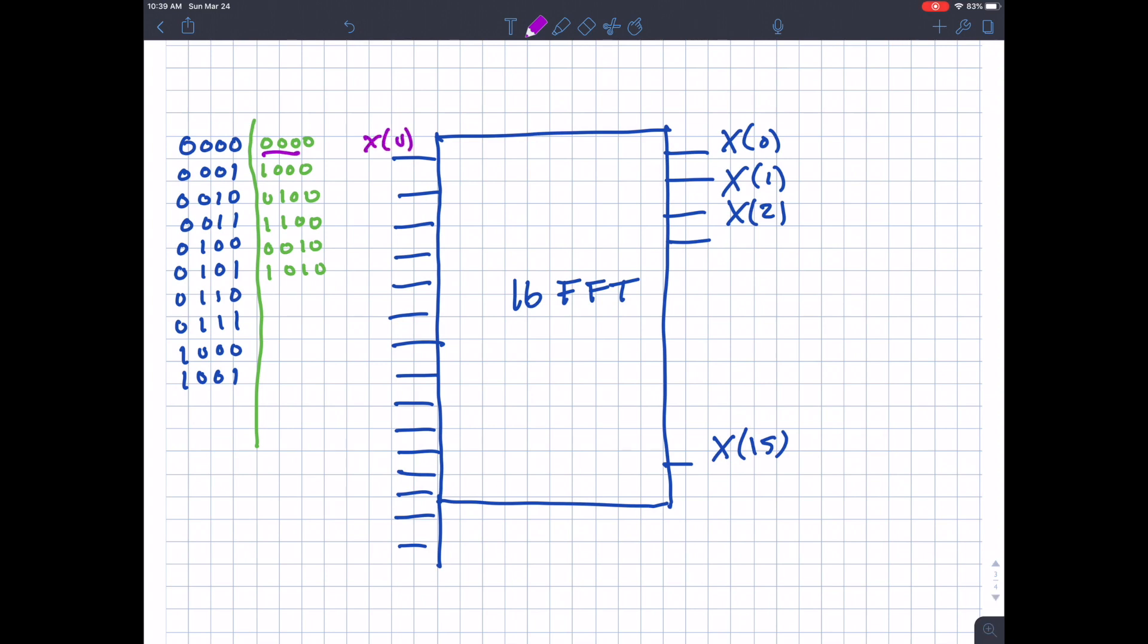So this is zero, this is eight, this is four, this is 12, this is two, and so forth, and so on. So that's what I meant on part G for this review problem. I'd expect you to fill that all the way out on an exam. So there you have it. There's the kind of problem you would expect for an FFT algorithm question on exam two.